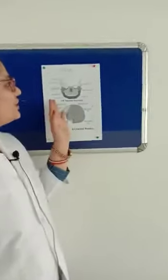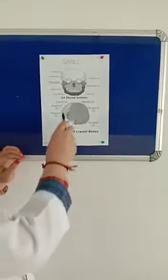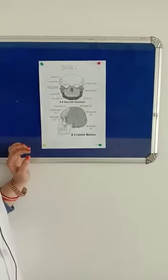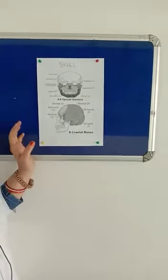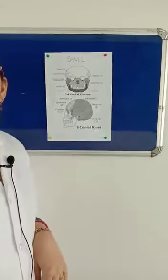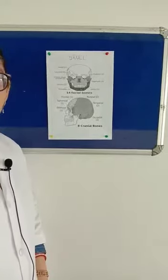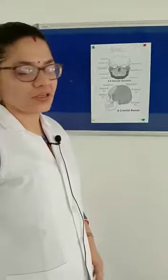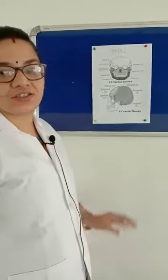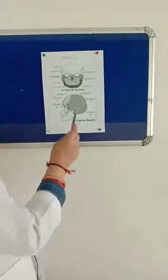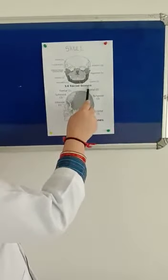Hello again. Today we are going to learn about the skull, as you can see in this chart. The skull is basically a bony cage in which the brain is situated. There are two functions of the skull: the first function is to protect the brain, and the second function is to provide shape to the face. First we will see this in the chart, and after that we will see the model.